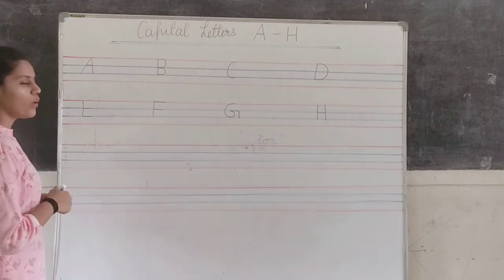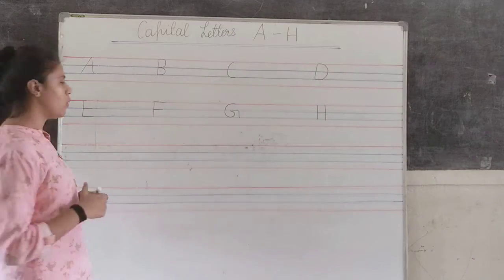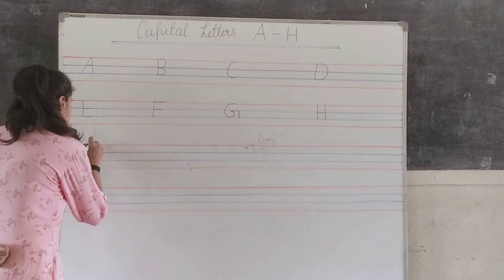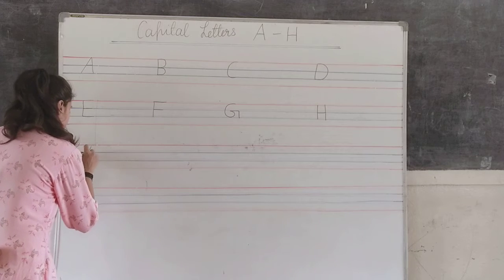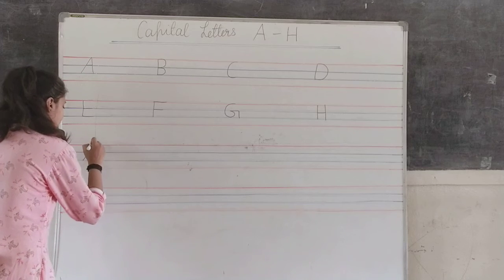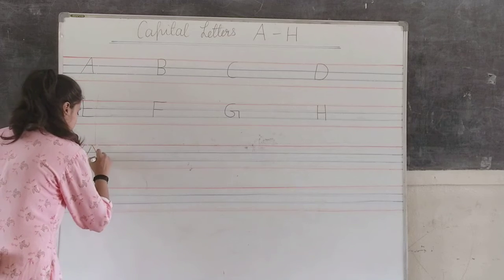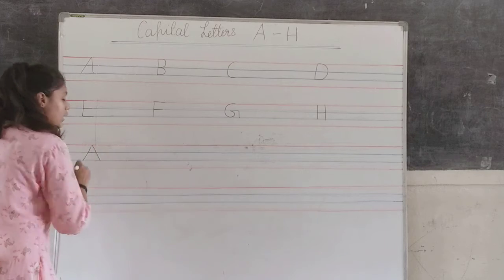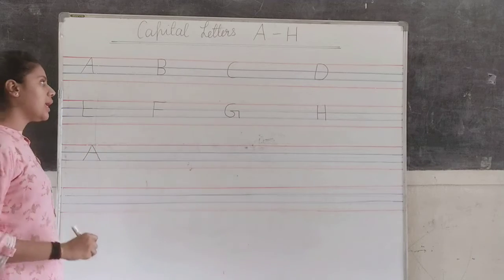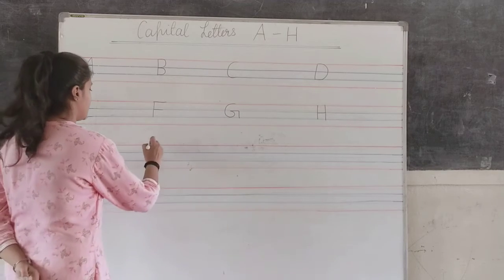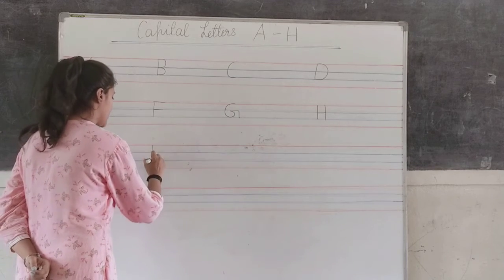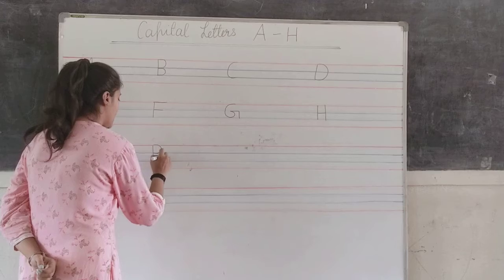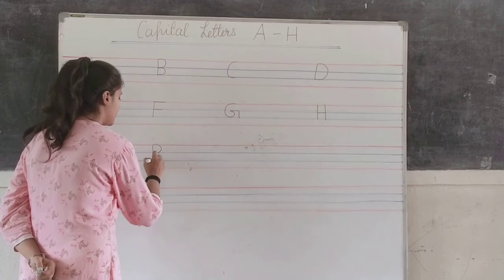So how to write A to H? Come on, write with me. A: one standing line, another standing line, and one slipping line. B: one standing line, one curve, and another curve.